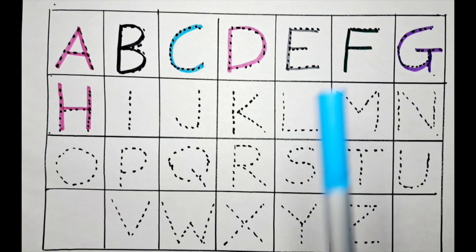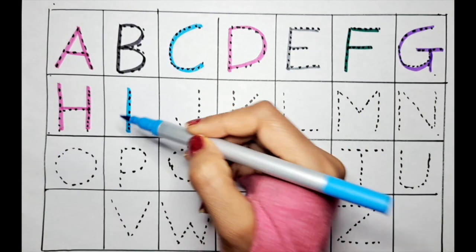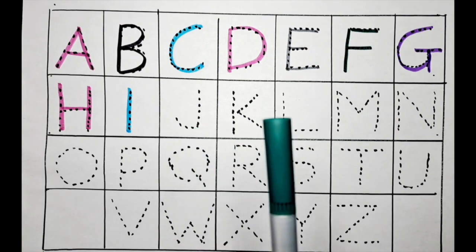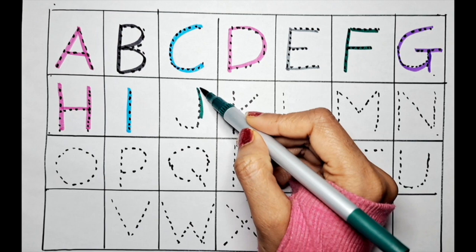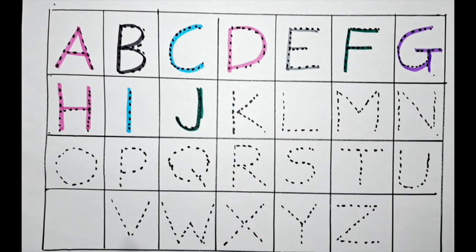Let's do it with the blue color. I for ice cream. Let's do the J with the dark green color. J for jackfruit.